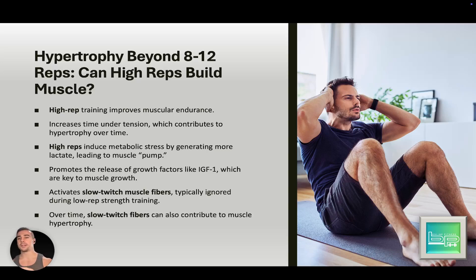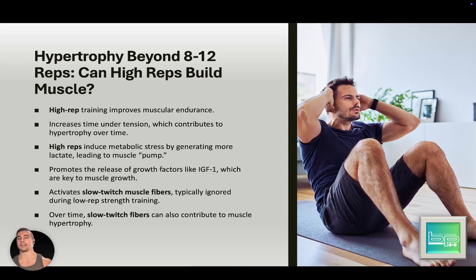When those slow twitch fibers are activated, you're focusing more on muscular endurance and power. High rep training isn't without hypertrophy benefits, but you won't see those muscle-building results as efficiently as you would staying within the 8-to-12 rep range. The results are there, but they take a more extended period of time.